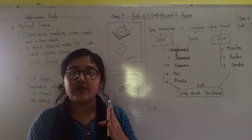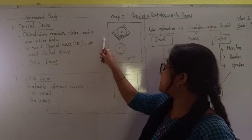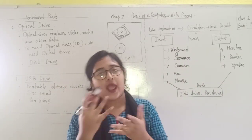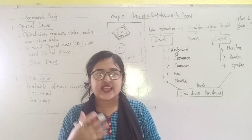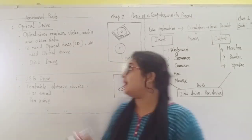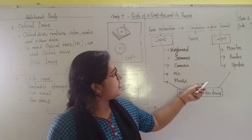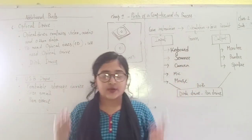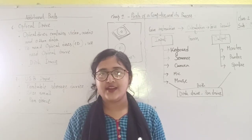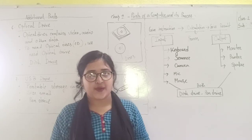But what you have to remember here is that optical drive and pen drive — they act both as input and output devices. As they can store data, they can also share the data. That's why optical drive and pen drive are both input devices and output devices. So today we have completed the second chapter. Study it thoroughly at home, and then we will move to the exercise part.